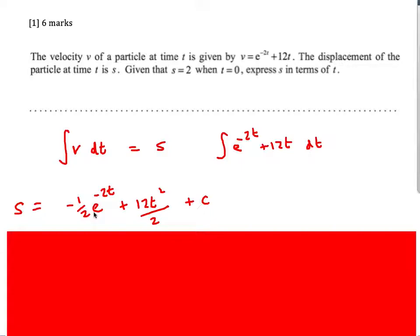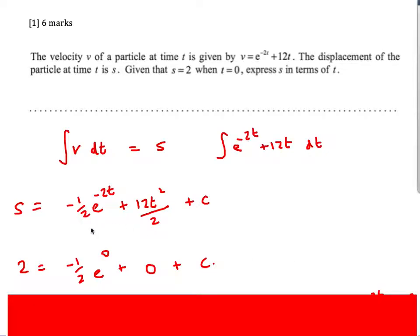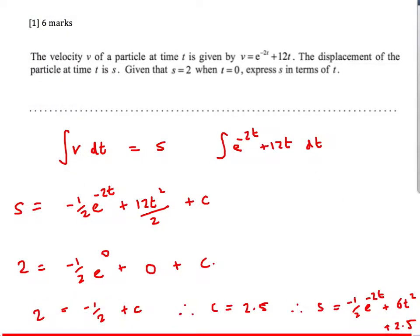We're given the boundary condition S = 2 when t = 0. Substituting in, we get C = 2.5. So the final answer is S = minus a half e to the minus 2t plus 6t squared plus 2.5.